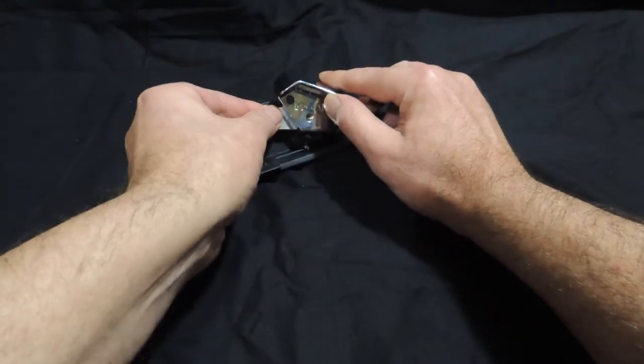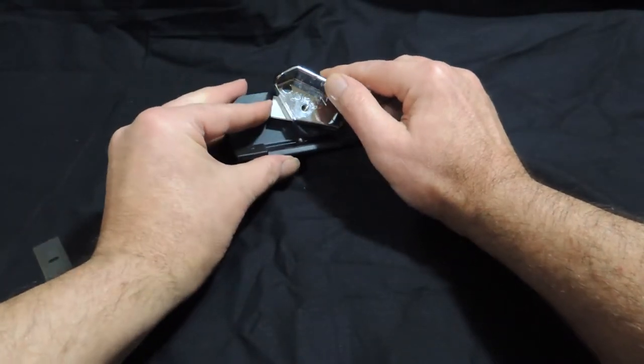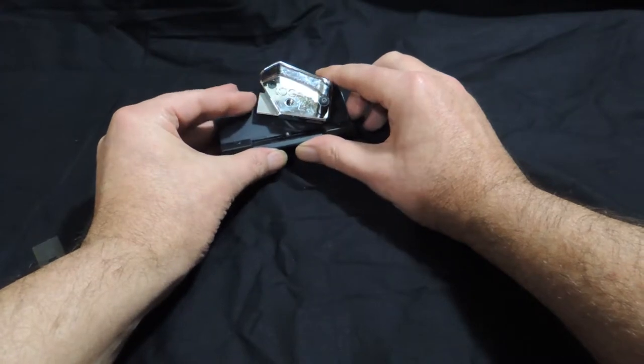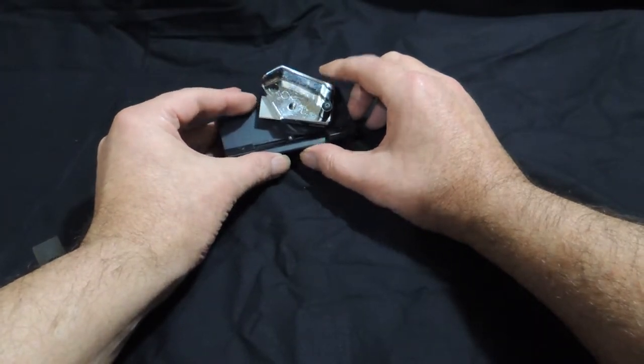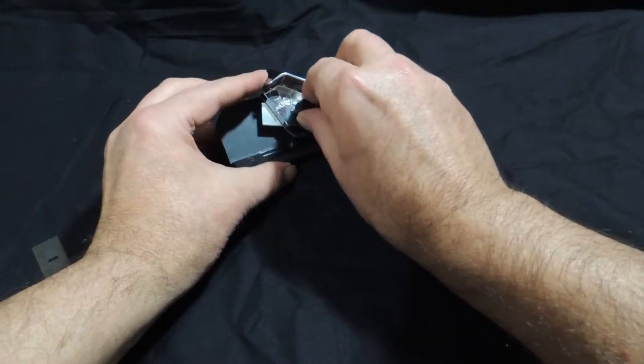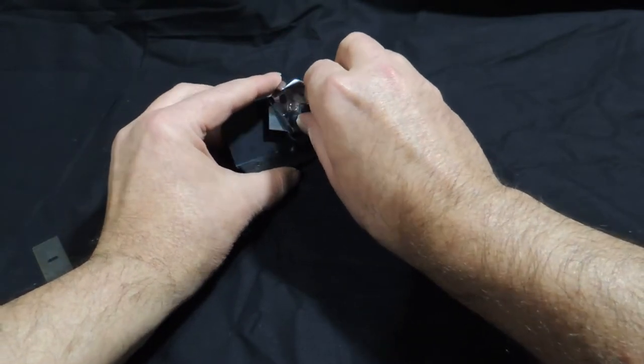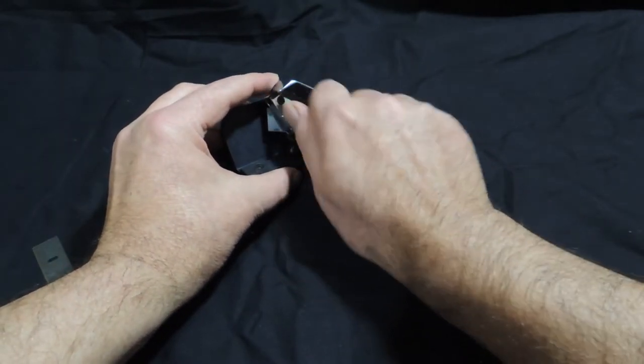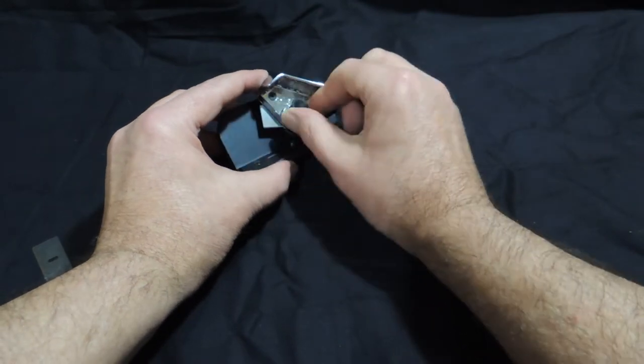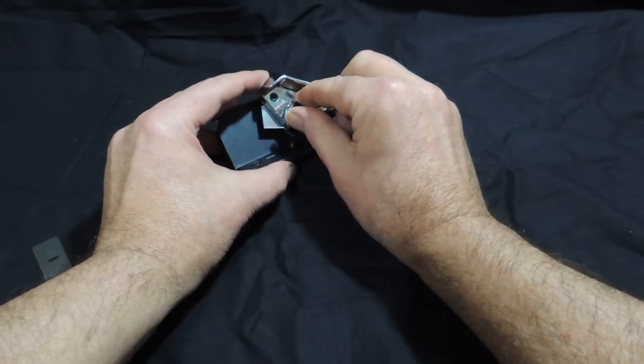Now simply slide the blade, the new one, back into the slot. There's no up and down movement. We can now get our clamping screw. And we just want to do that with a nice firm firmness. Don't over tighten.